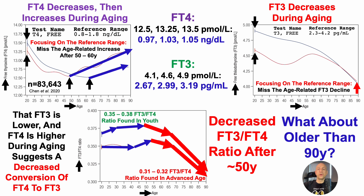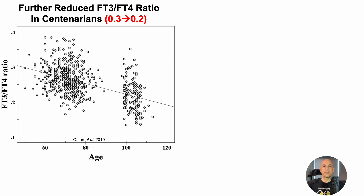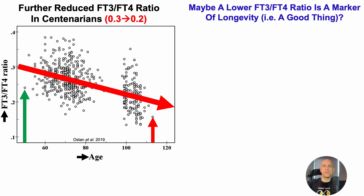What about older than 90 years? There is a further reduced free T3 to free T4 ratio in centenarians, going from 0.3 to 0.2. The y-axis shows the ratio plotted against age, with the age range going from 50 years to about 113 years old. There is a significant inverse correlation — a relatively lower ratio at the oldest ages. Perhaps a lower ratio is a marker of longevity — something we should strive for.